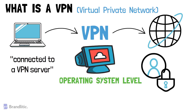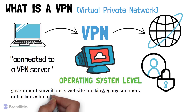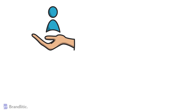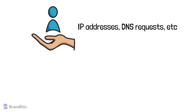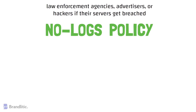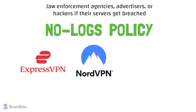The encryption in a VPN also protects you from government surveillance, website tracking, and any snoopers or hackers who might try to intercept your device. In all, you can say that a VPN provides you with the ultimate online privacy and security. It's important to note that both VPN and proxy providers can log user data such as IP address, DNS requests, and other details. As a user, you should avoid such providers because they can give this information to law enforcement agencies, advertisers, or hackers if their servers get breached. To keep your activity truly private, look for a provider that has a strict no-log policy. Some I can recommend include ExpressVPN, NordVPN, and Surfshark.